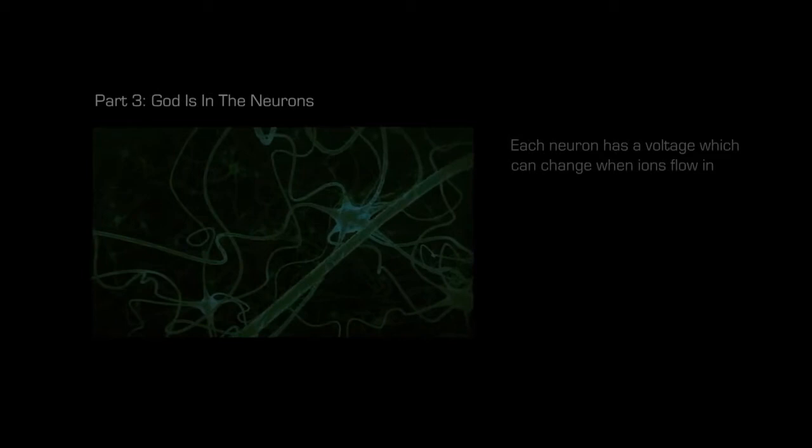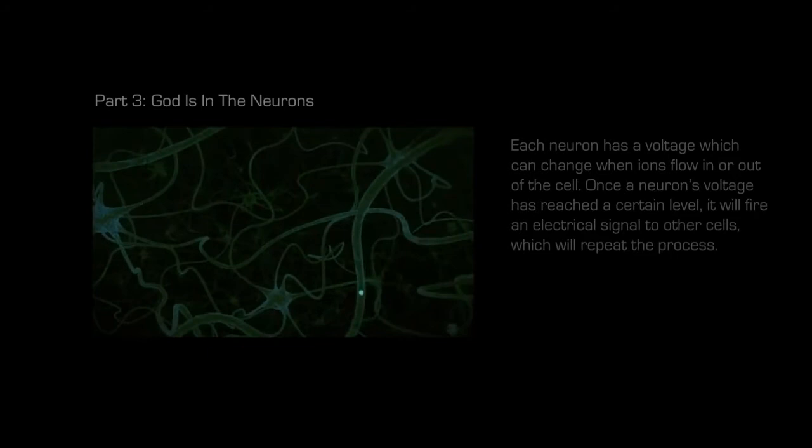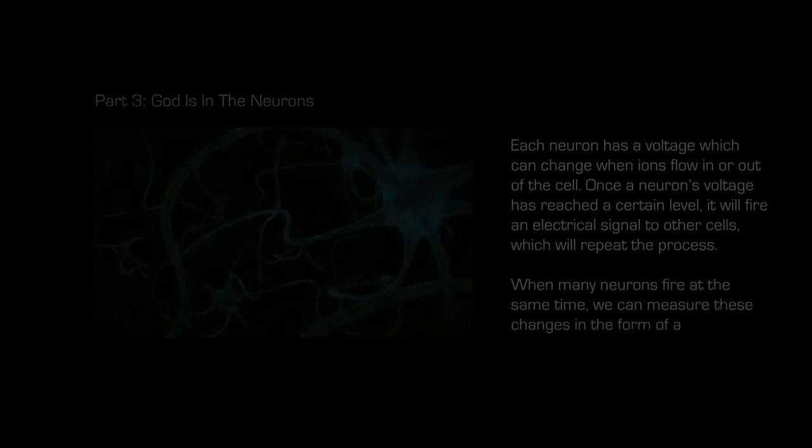Each neuron has a voltage, which can change when ions flow in or out of the cell. Once a neuron's voltage has reached a certain level, it will fire an electrical signal to other cells, which will repeat the process. When many neurons fire at the same time, we can measure these changes in the form of a wave.